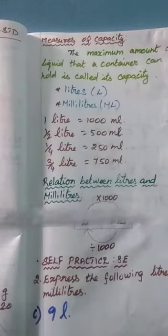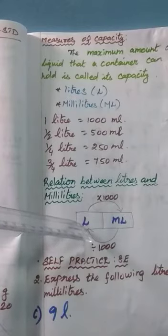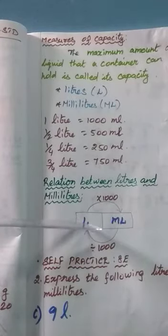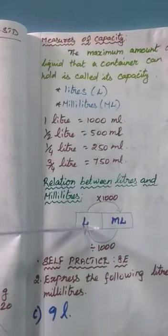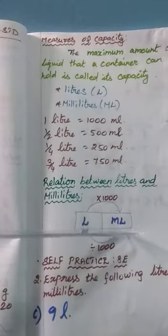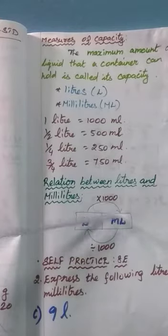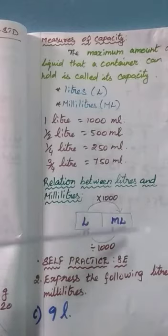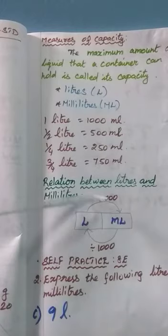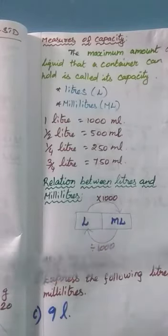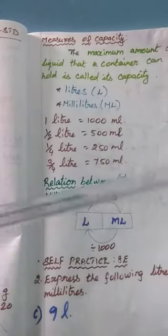Next, we see the relation between liters and milliliters. Same method as we saw for kilogram and meter. You have to convert liters into milliliters and milliliters into liters. Liter is the biggest unit and milliliter is the smallest unit. Converting biggest to smallest means you multiply by 1000, since 1 liter equals 1000 milliliters. Converting smallest to biggest means you divide by 1000.